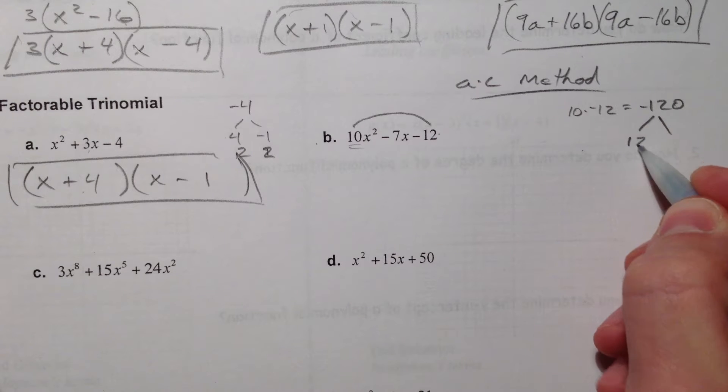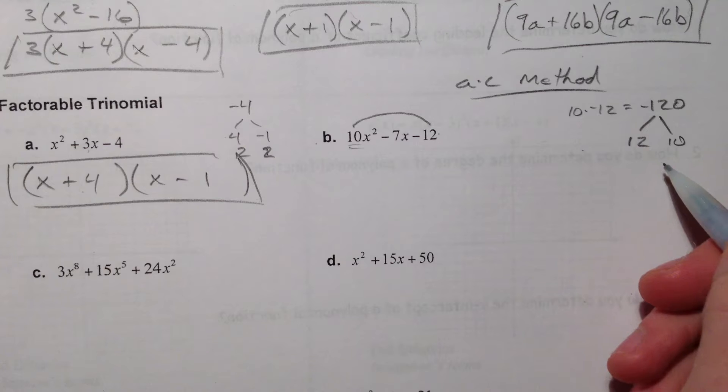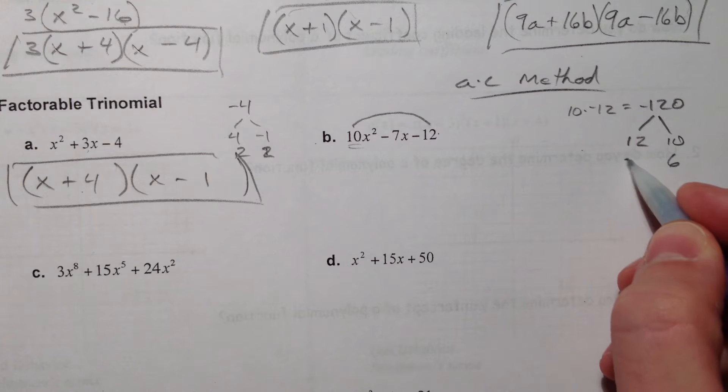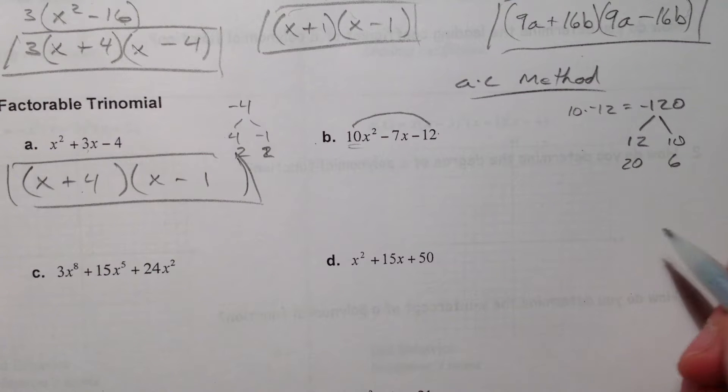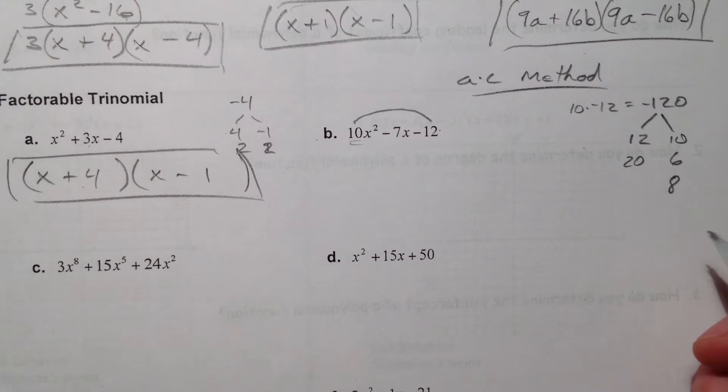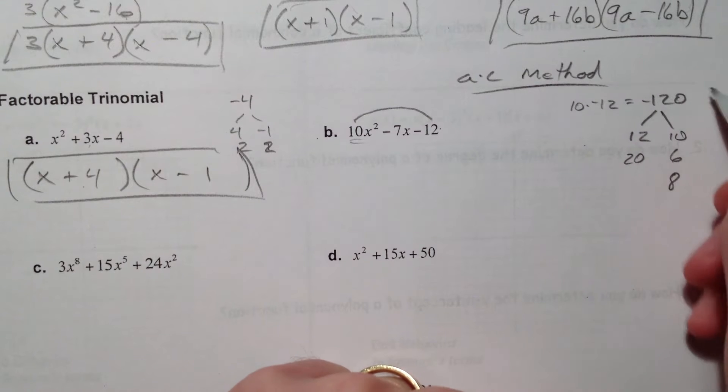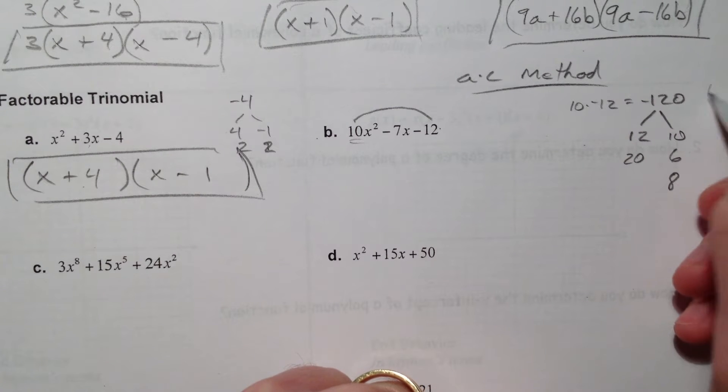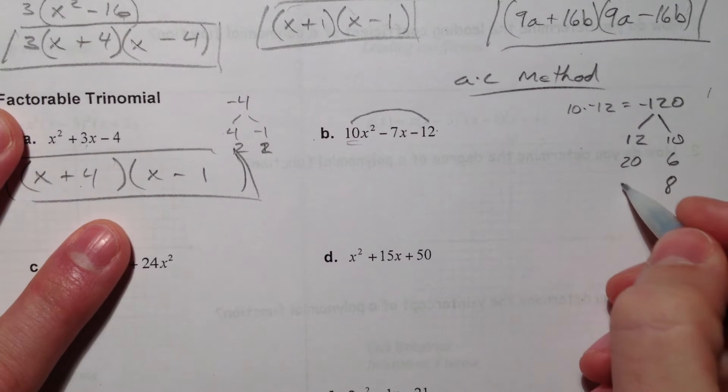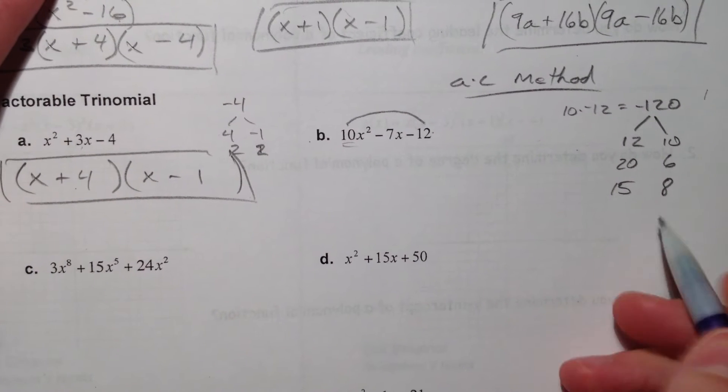But what multiplies to negative 120 and adds to negative 7? So, well, there's 12 and 10. They've got to be separated a little bit more than that. So you could say 6 and 20. They've got to be right in the middle of there. So what about 8 and... I'm thinking 12 and 20. 15. Yeah. Okay. 8 and 15.